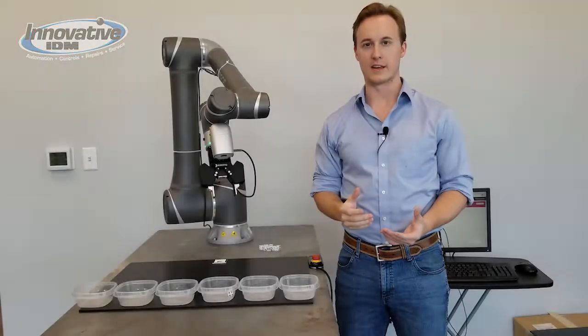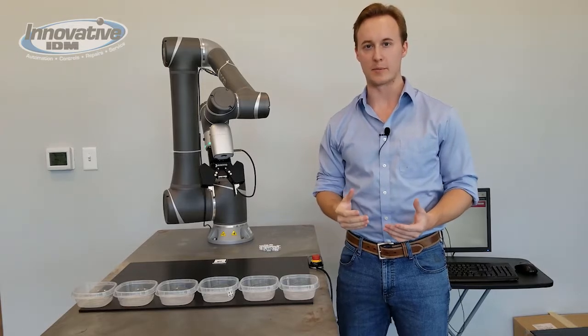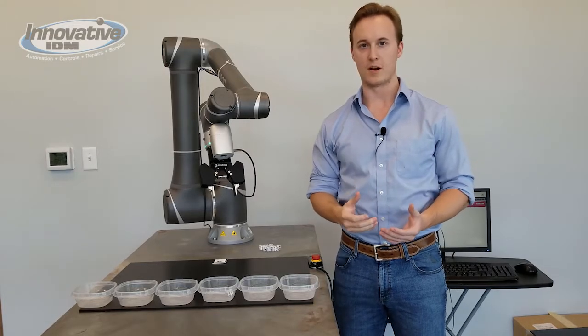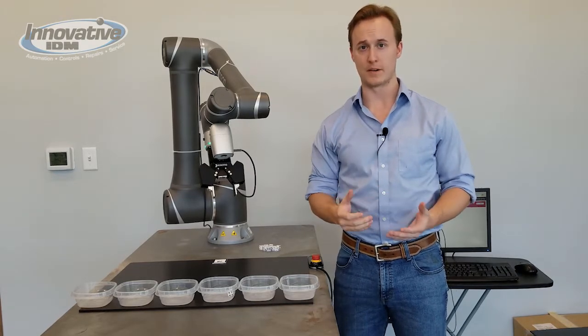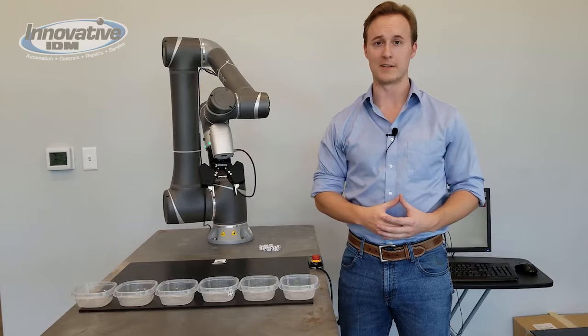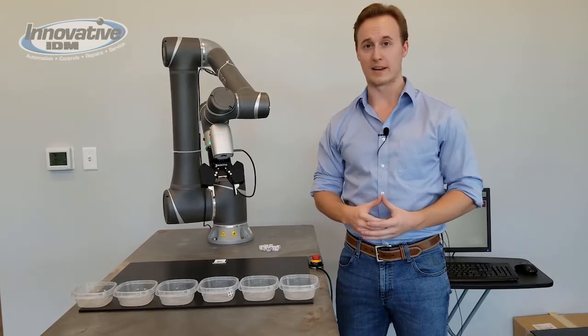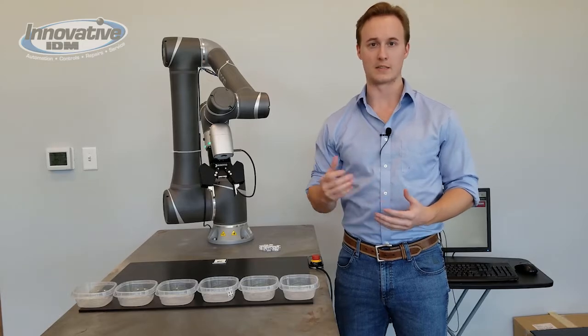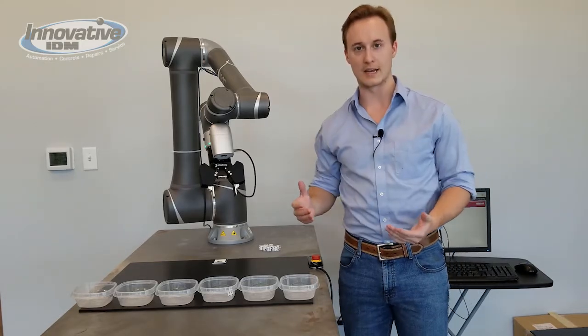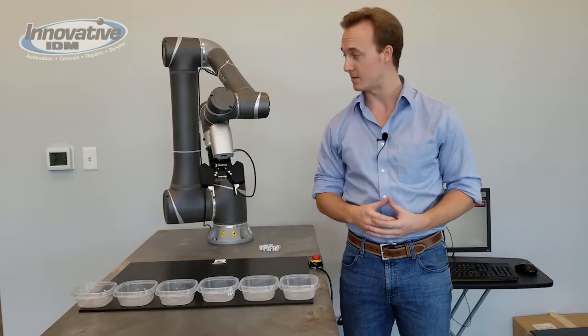Alright, so today I'm standing here with the Omron TM Collaborative Articulated Arm. This is the new robot from Omron Robotics. We have this demo set up along with a couple of other robots in the robot lab here at Innovative in Texas, and this robot is rated as a collaborative articulated arm, meaning it can work right next to people without you seeing any extraneous safety hardware that we're used to seeing in other robot work cells.